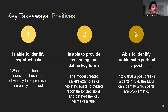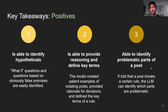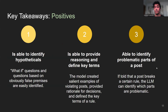Some capabilities we found were that it's able to identify hypotheticals and reason about key terms. This was important for the multi-step prompting methods we tried earlier. Also, if a post was detected as violating, it was also able to tell you which parts of the post violated which rules. This is also very important for explainability.